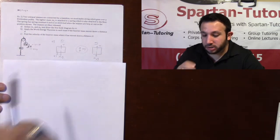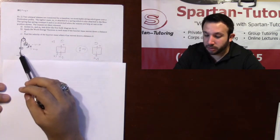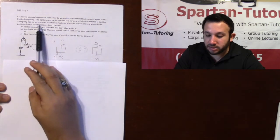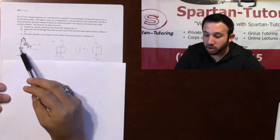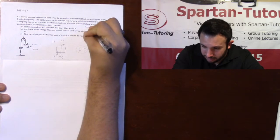goes over a frictionless pulley. The lighter mass m1 is attached to a spring which is also attached to the floor. The spring has a spring constant k and is unstretched when the masses are held at rest in the position shown. The masses are then released.